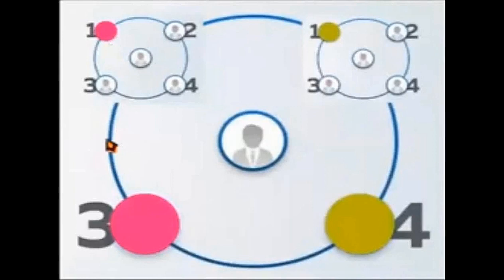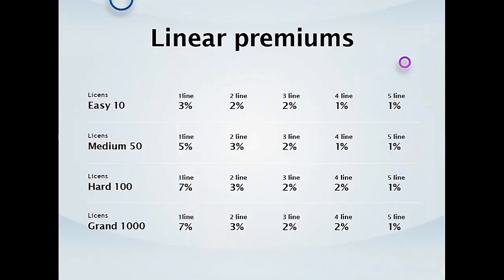Friends, in linear premiums you will see you will earn up to five levels from your team. From first line you will earn 3%, and from second and third level 2%, and from fourth and fifth level 1% each. There are rewards also in carriers.